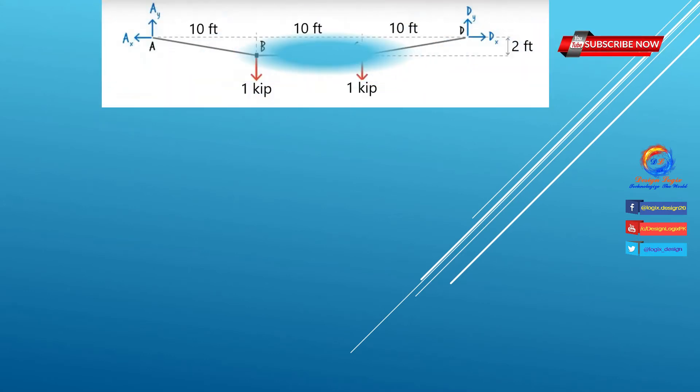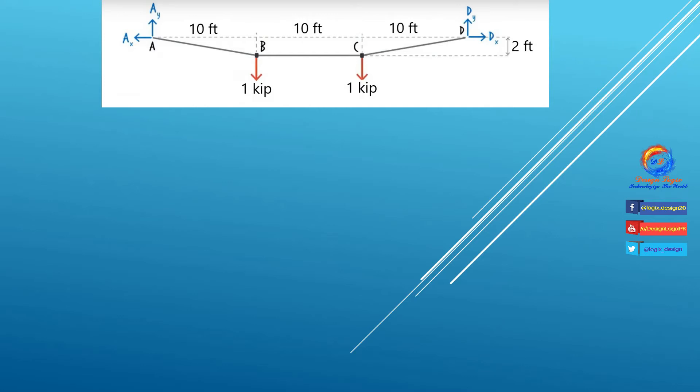Let's first draw a free body diagram of the structure. Joints A and D each have two unknown forces in the X and Y direction. The 1 kip loads from the traffic lights act downward at 10 feet and 20 feet distance from joint A.